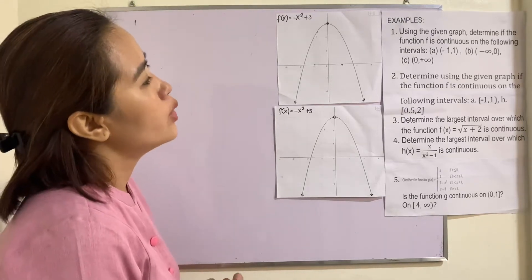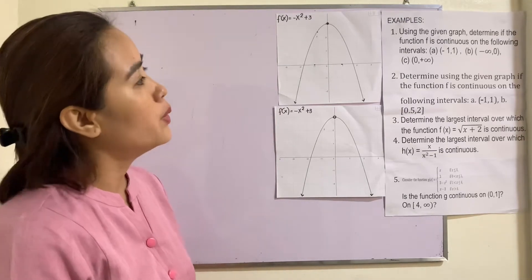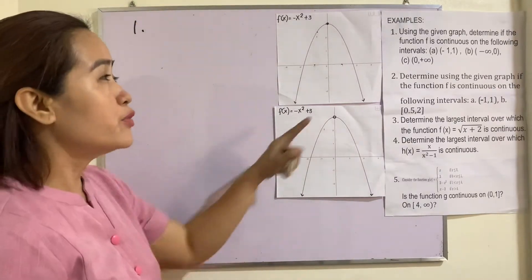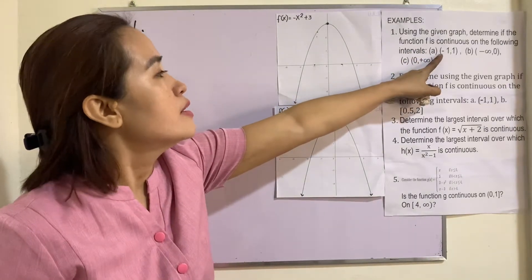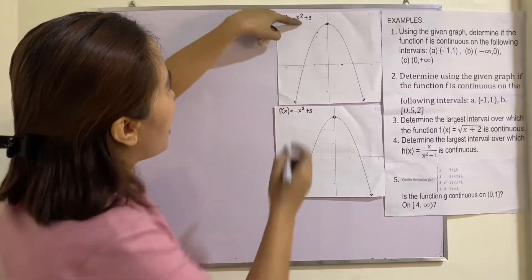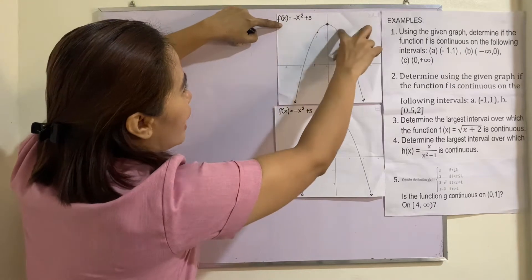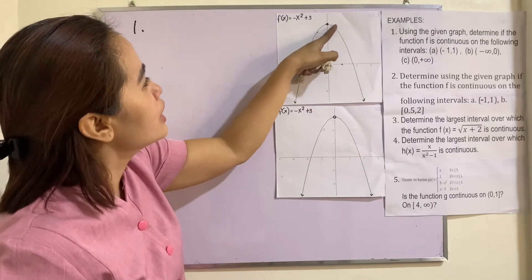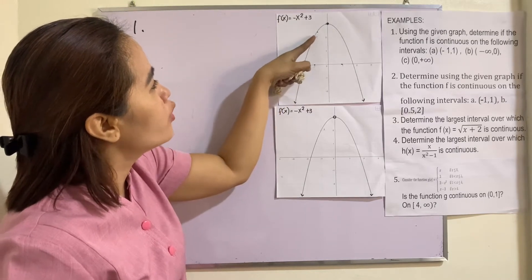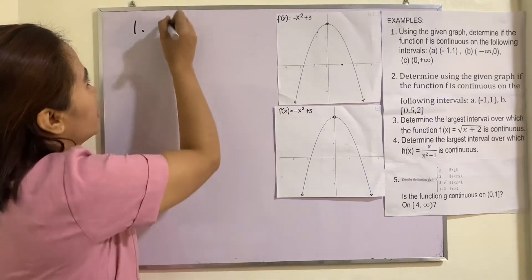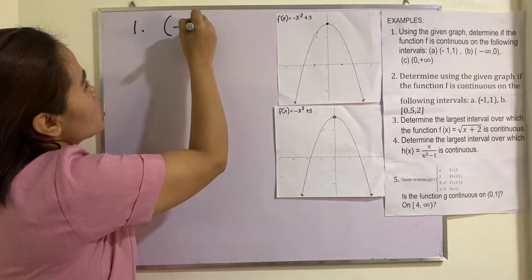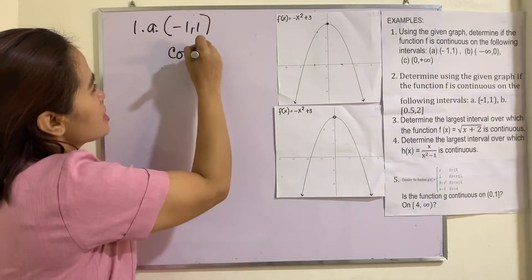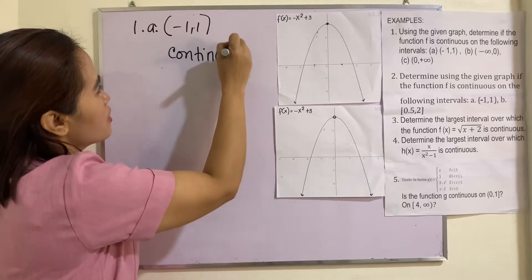A: negative 1 to 1. From here we can see the graph from negative 1 up to positive 1. Since we can trace the graph without lifting our pen from negative 1 to positive 1, therefore we can say that the function is continuous at this interval: negative 1 to positive 1.